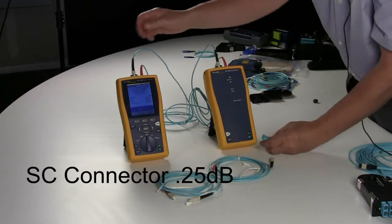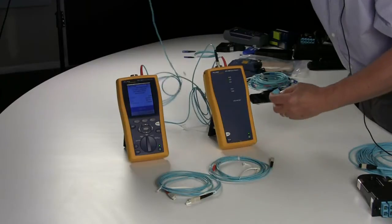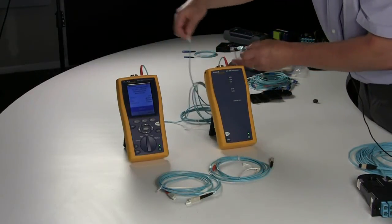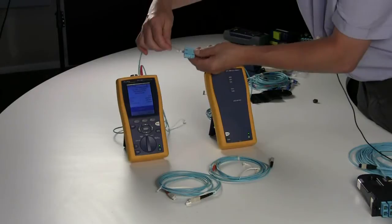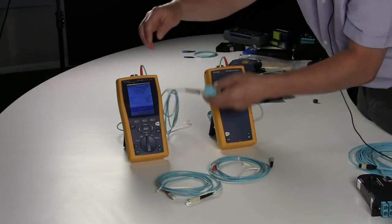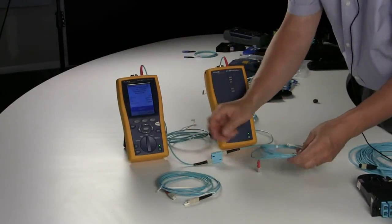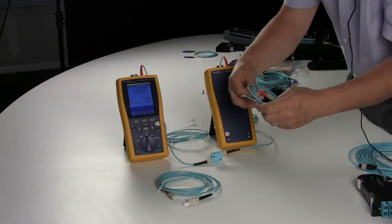So in order to do that, you would remove the receive, put it into an adapter, remove the receive from the other side, put it into the adapter, and then introduce your reference cords as you would with method B.